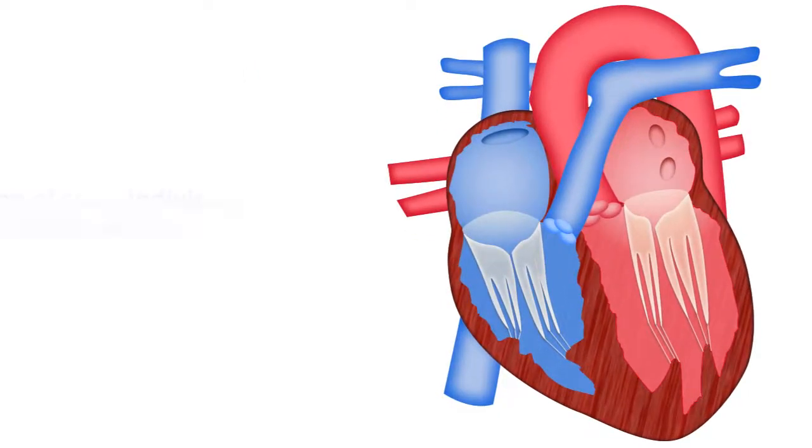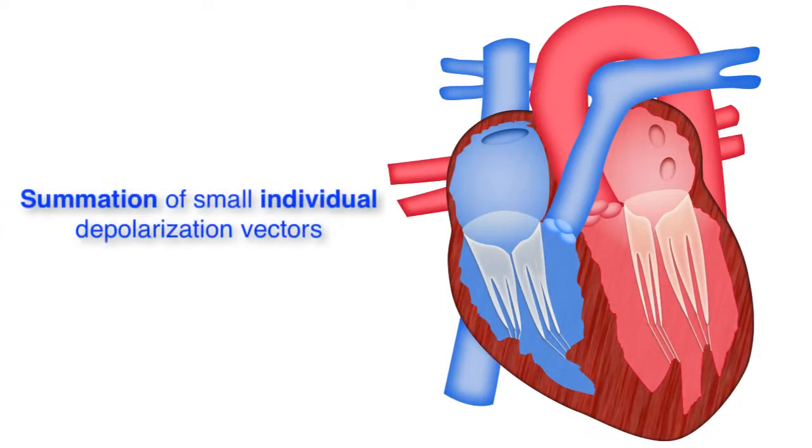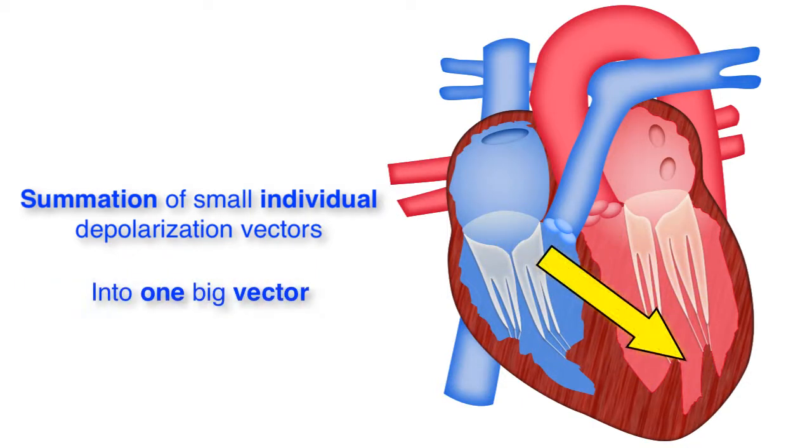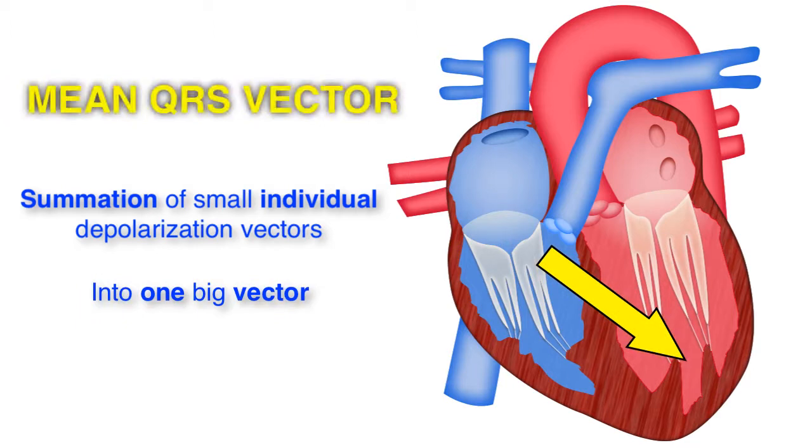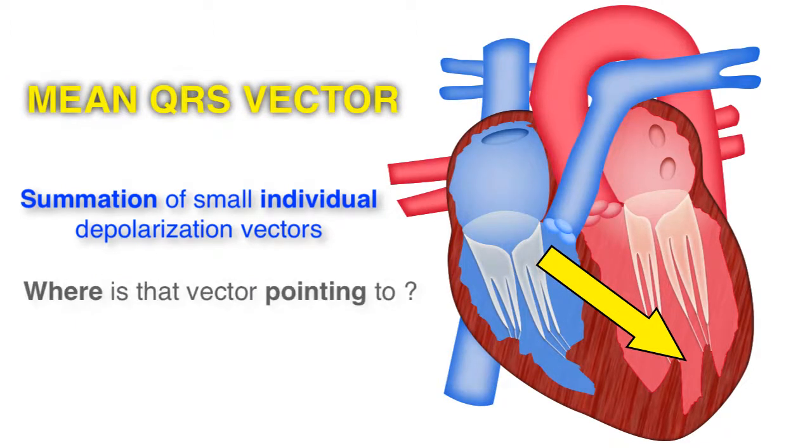Basically, the mean QRS represents a summation vector. Imagine if all the individual depolarization vectors were summed up into one big vector. Figuring out the mean QRS vector is figuring out where that big vector is pointing to.